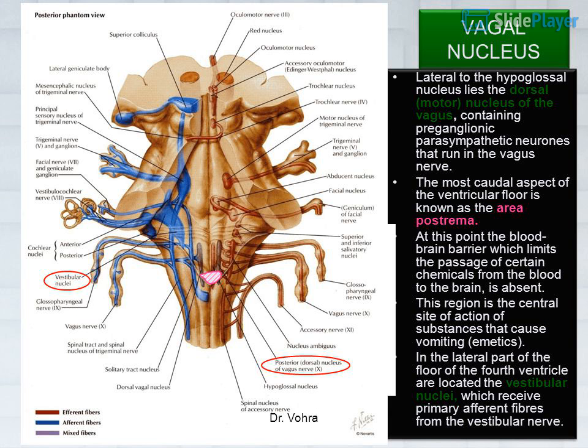Lateral to the hypoglossal nucleus lies the dorsal motor nucleus of the vagus, containing preganglionic parasympathetic neurons that run in the vagus nerve. The most caudal aspect of the ventricular floor is known as the area postrema, where the blood-brain barrier — which limits passage of certain chemicals from blood to brain — is absent. This region is the central site of action of substances that cause vomiting (emetics). In the lateral part of the floor of the fourth ventricle are located the vestibular nuclei, which receive primary afferent fibers from the vestibular nerve.